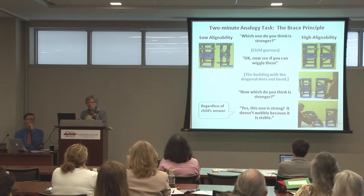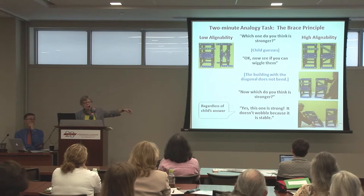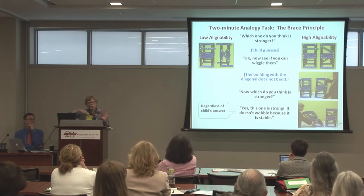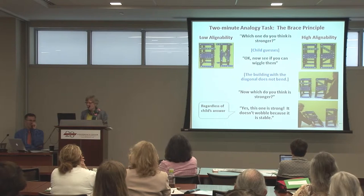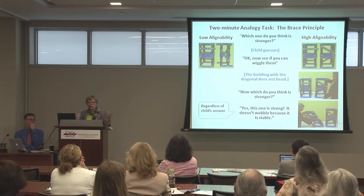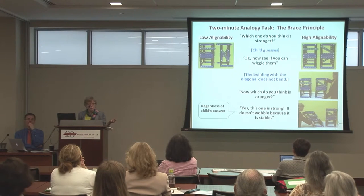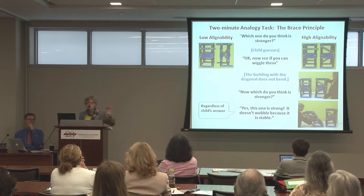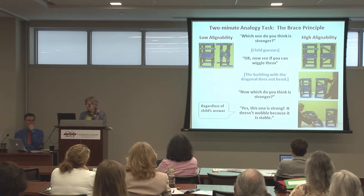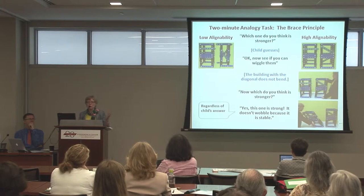We basically got two minutes with each child before they started building with their parents. Before they sit on the platform and build their own building with their families, we show them a pair of buildings. If you look on the right side, that's the high alignability pair — the prediction is it should do really well because they can easily align everything about the building, so the difference between the diagonal and the horizontal cross beam will leap out at them. On the left is a low alignability pair where the same distinction is there, but because the buildings are hard to align and there are extraneous differences, it's not going to be as easy. There's also a no-training group. We say, which building is stronger? They guess fairly randomly. Then we say, wiggle them — let's check it out. When you wiggle them, you find that the one without a brace will wiggle all the way to the ground. Almost all of the roughly 160 kids noted at that point which building was stronger.